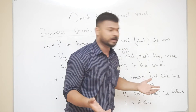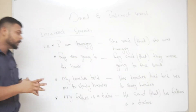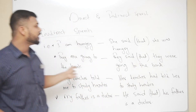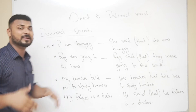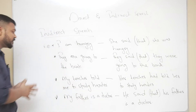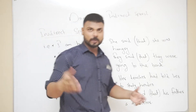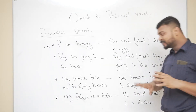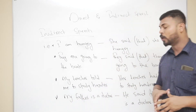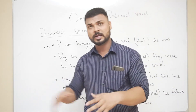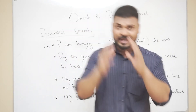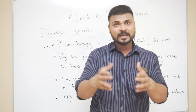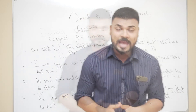The next example is 'They are going to the bank.' In indirect speech: They said that they were going to the bank. Present simple changes into past simple, as I just told you. The next is 'My teacher told me to study harder' — so her teacher had told her to study harder. And the last one: 'My father is a doctor.' If I say my father is a doctor and he is still alive and still a doctor, then you say: He said that his father is a doctor — using present tense because it is still true.